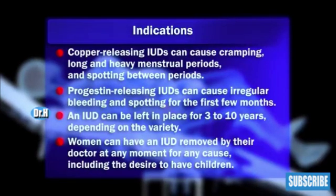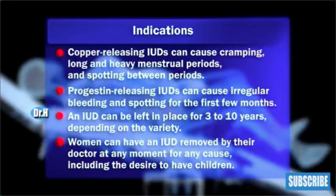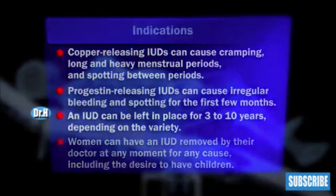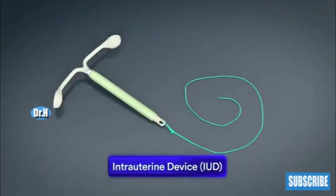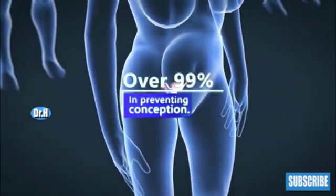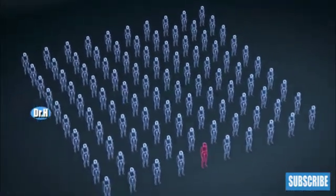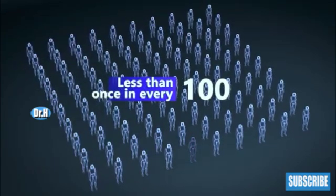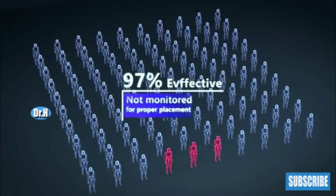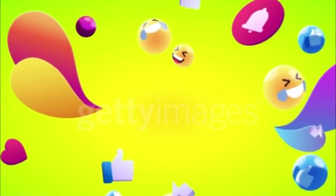Women can have an IUD removed by their doctor at any time for any reason, including the desire to have children. An IUD is one of the most successful methods of birth control, with a success rate of over 99 percent in preventing conception. This means that a woman who uses an IUD and regularly checks it for proper placement will become pregnant less than once every hundred uses. If IUDs are not monitored for proper placement, they are only around 97 percent effective.